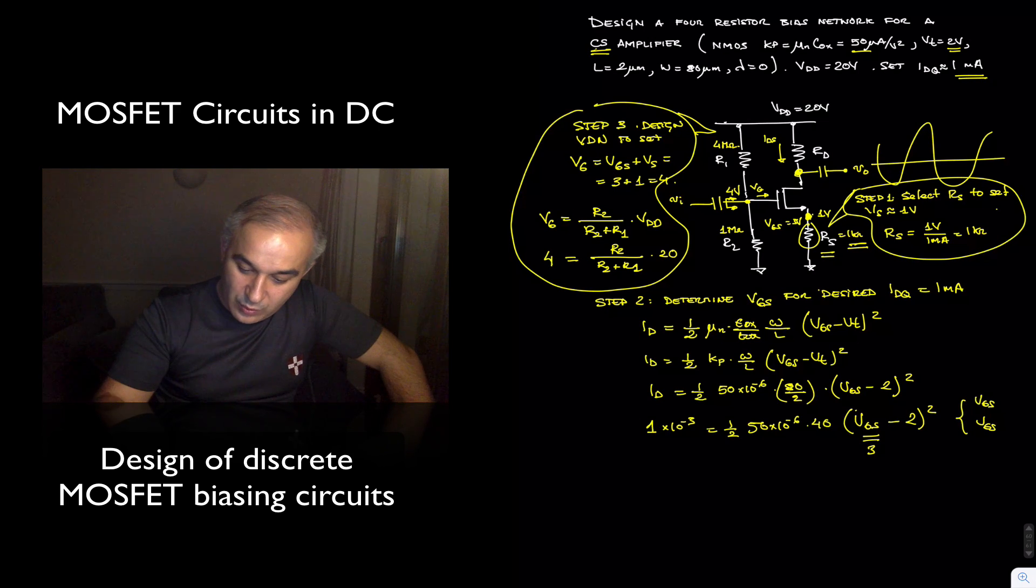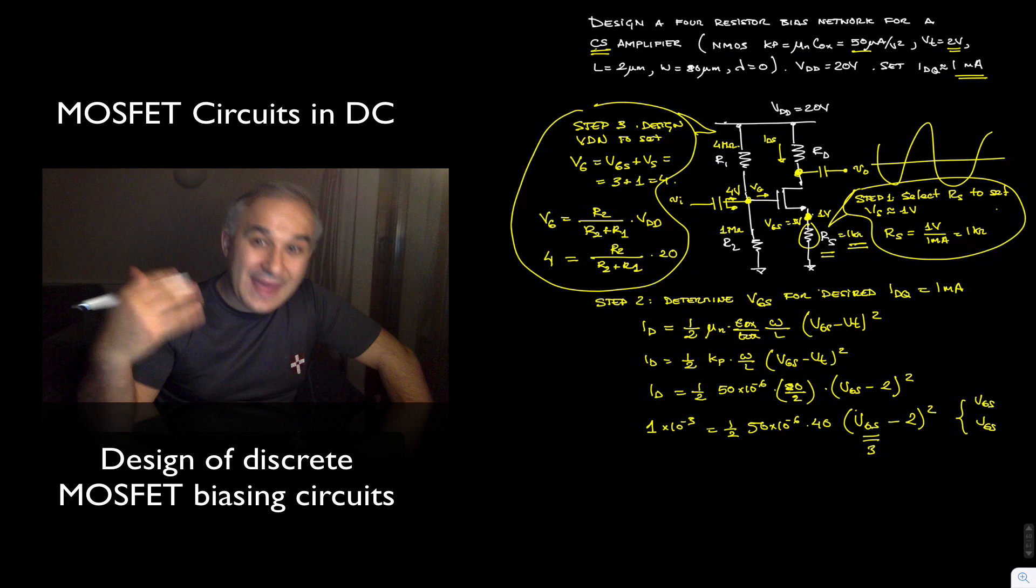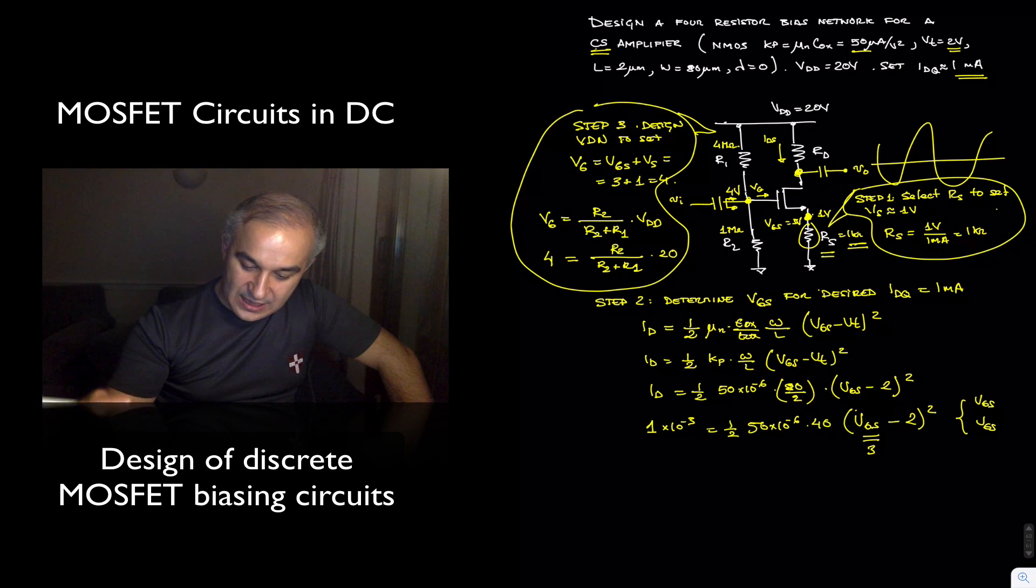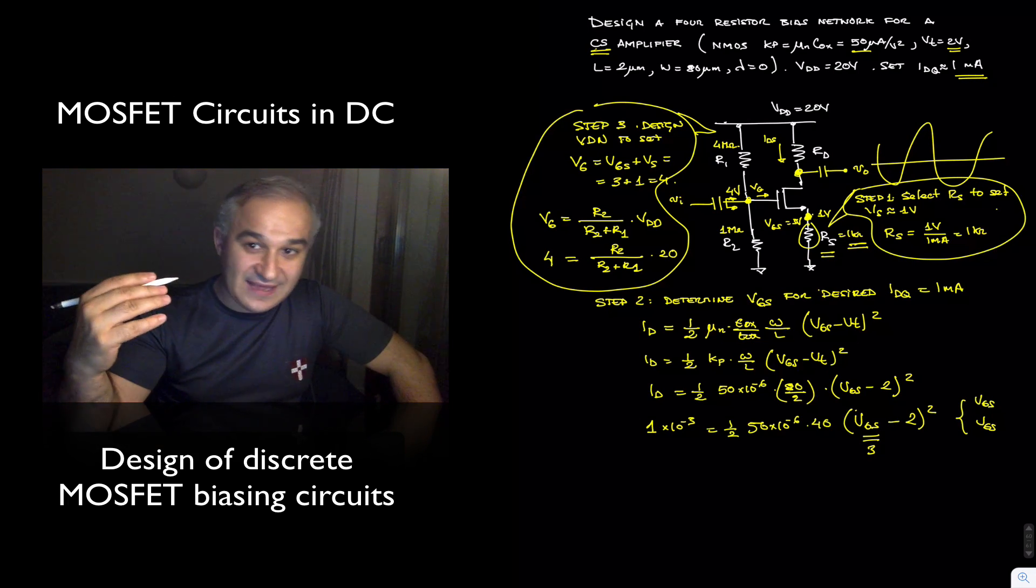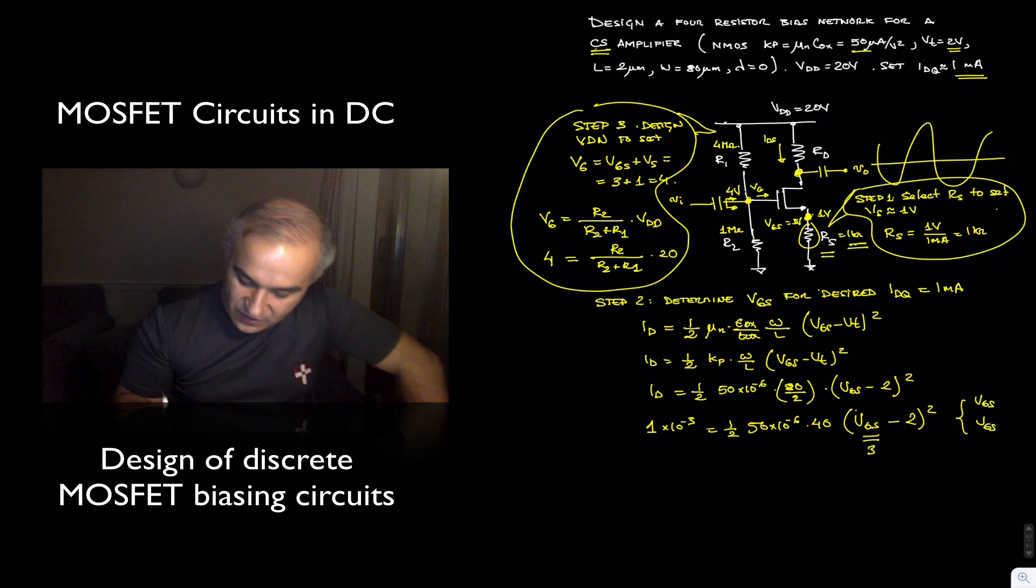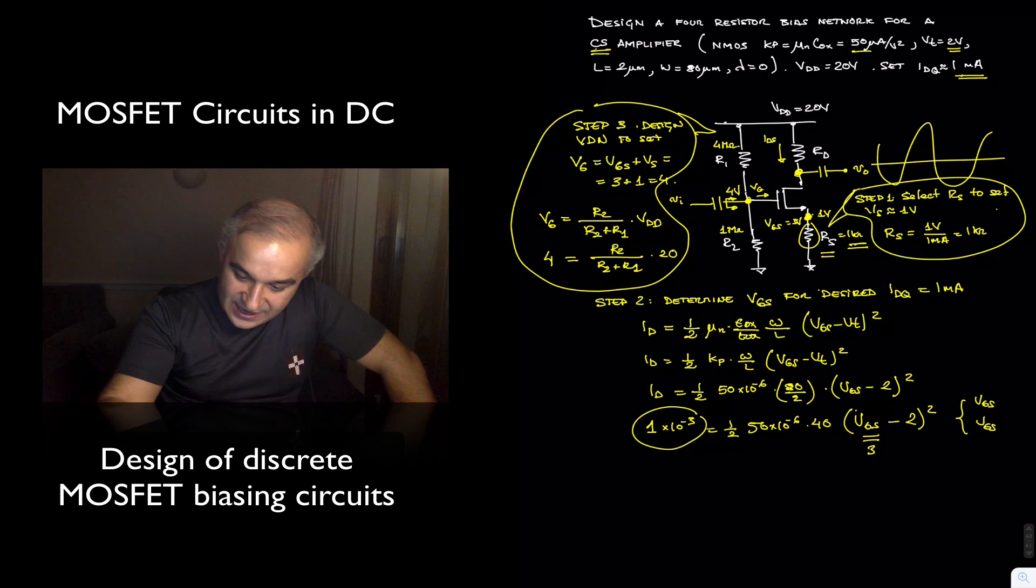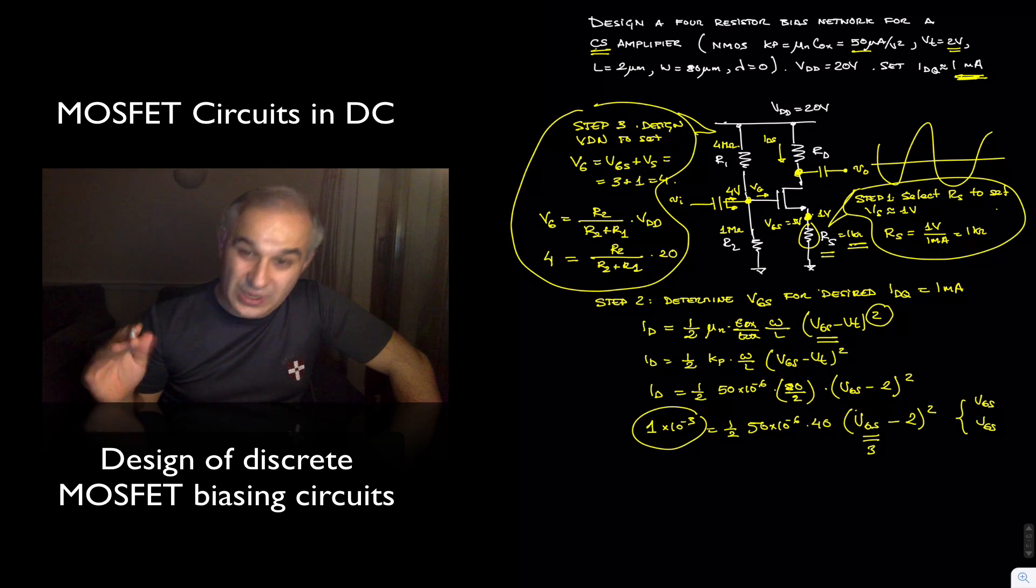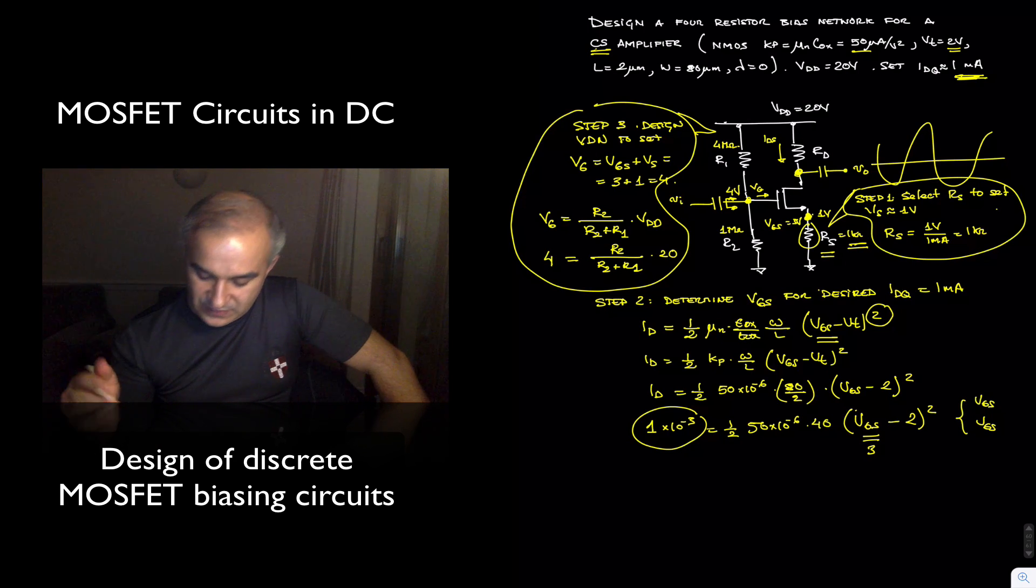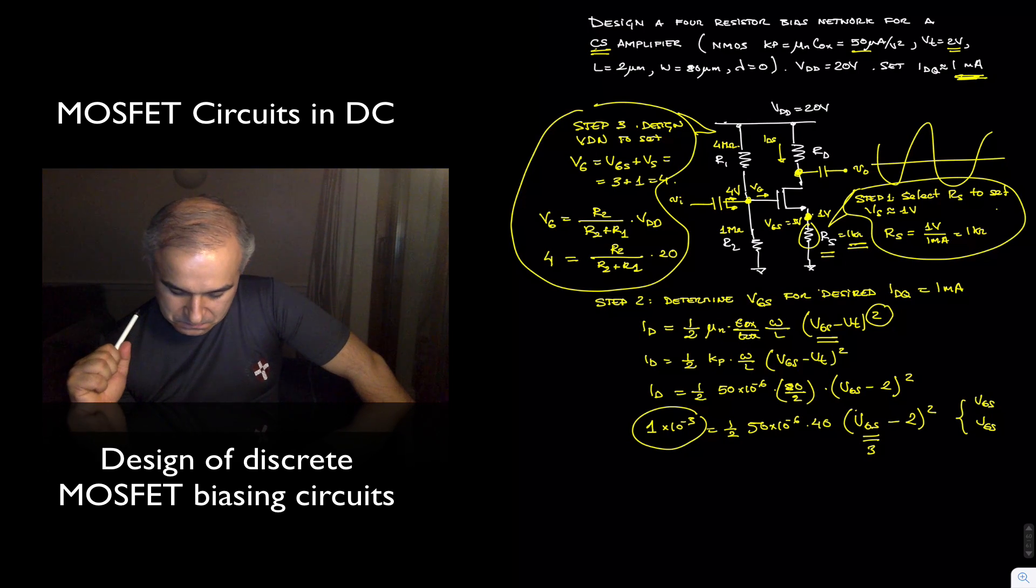Contrary to the BJT where we will immediately know what the voltage is at the base if this was a BJT, in the case of a MOSFET, we don't know the voltage at the gate. We need to solve, plugging for a particular value of our desired quiescent current and solve for the voltage gate to source. And because the equation is quadratic, you have two solutions, one of which you need to discard. It does not make sense, meaning the transistor will not be in saturation.